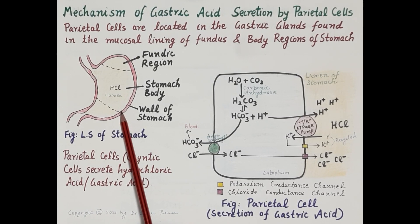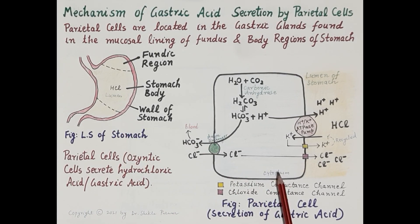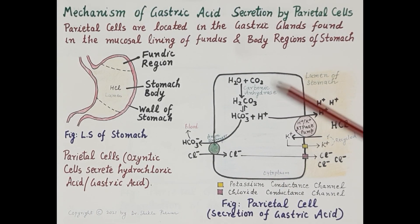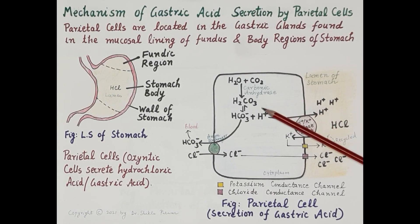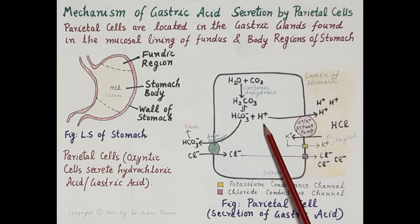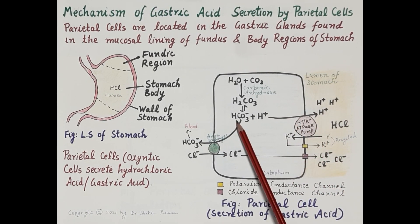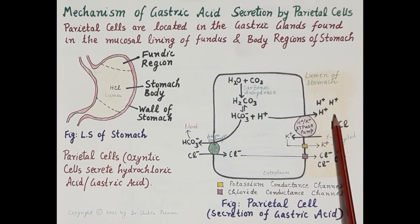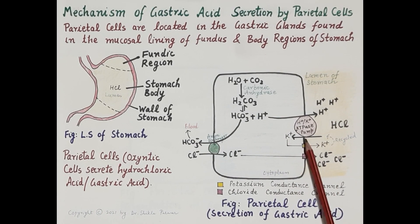This is the diagram of the parietal cell. Inside the cytoplasm, water and carbon dioxide combine in the presence of the enzyme carbonic anhydrase to produce carbonic acid. Carbonic acid spontaneously dissociates into a hydrogen ion and a bicarbonate ion.